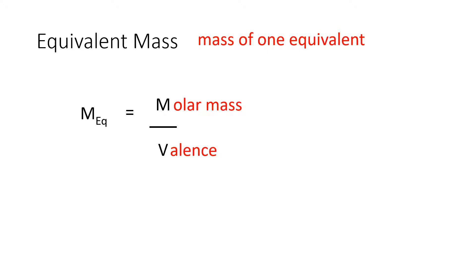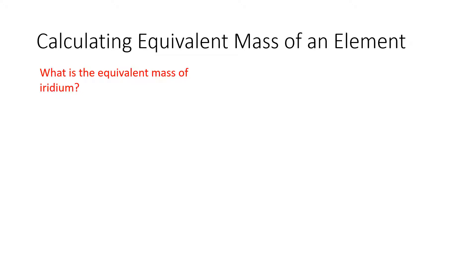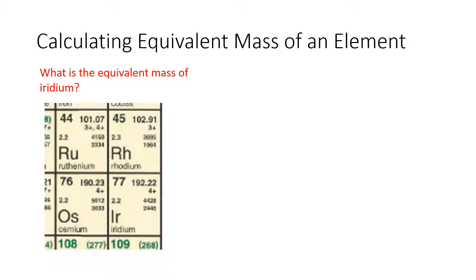Okay, sounds like fun. Let's go on and try an example here. Let's calculate the equivalent mass of an element. For example, we're going to use iridium and it's a heavy metal. So we're going to look at the periodic table and we're going to read its two things: its molecular mass and its valence.